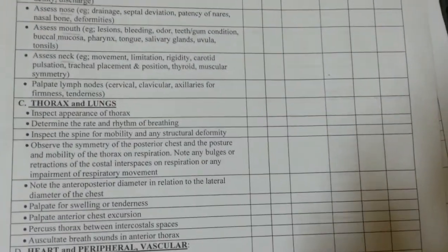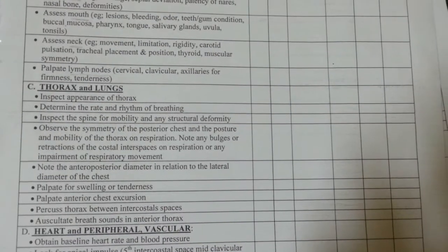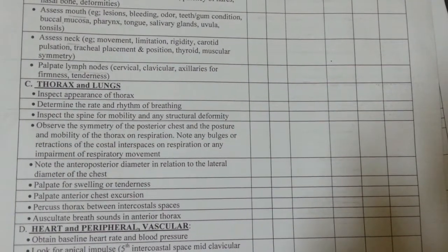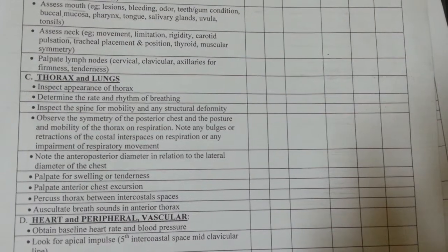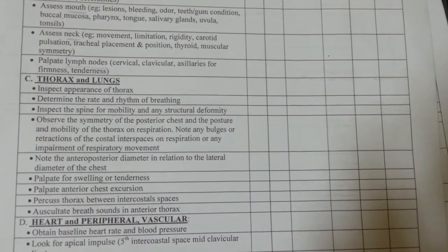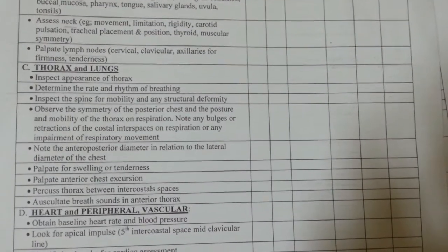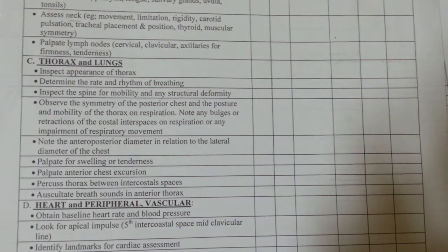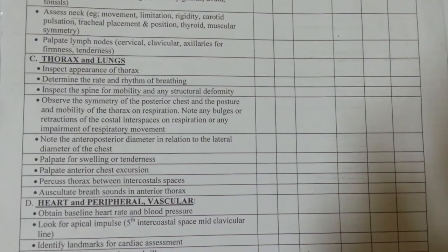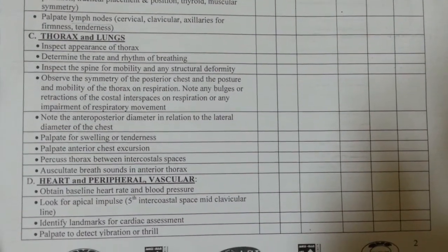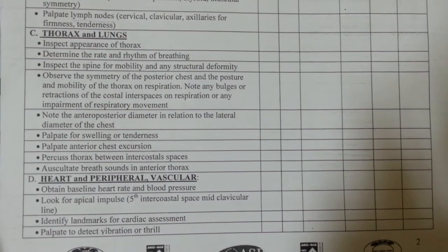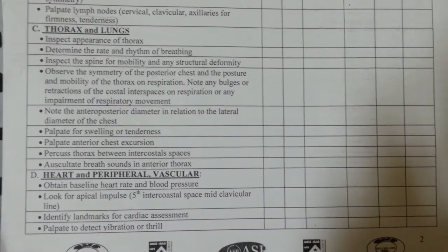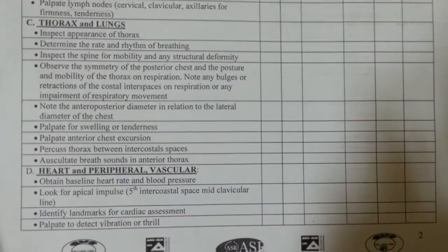For the thorax and lungs, inspect the appearance of the thorax and determine the rate and rhythm of breathing. Inspect the spine for mobility and any structural deformity. Observe symmetry of the posterior chest and mobility of the thorax on respiration. Note any bulges or retractions of the costal interspaces, the anterior-posterior diameter relative to the lateral diameter, and palpate for swelling, tenderness, and anterior chest excursion.